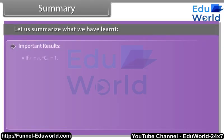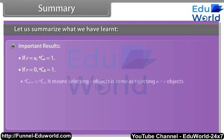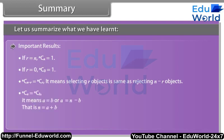Important results: (1) If R = N, NCN = 1. (2) If R = 0, NC0 = 1. (3) NC(N−R) = NCR — selecting R objects is the same as rejecting N−R objects. (4) NCA = NCB means A = B or A = N−B, that is N = A+B. Theorem 6: NCR + NC(R−1) = N+1CR.